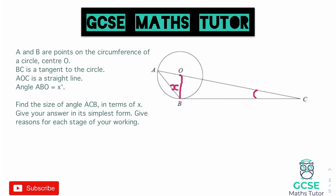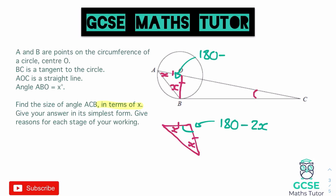By drawing in line OB we've created an isosceles triangle, since it's formed by two radii. The base angles in an isosceles are equal, so the angle OAB is also X. If we draw that triangle separately with both base angles as X, we can work out the apex angle in terms of X: 180 minus 2X. So that angle at the top is 180 minus 2X, and we can label that on the diagram.